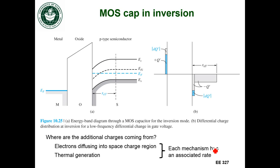Since there are rates associated with those processes, if I start changing my voltage on the metal infinitely quickly, this charge cannot change that quickly. It's going to take some time for either more electrons to diffuse in, or for a thermal generation event to occur. So if I change the voltage on my metal at a high enough frequency, the charge in the inversion layer is not going to be able to keep up.